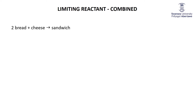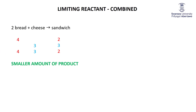Consider this analogy: I like cheese sandwiches — two bits of bread and one slice of cheese per sandwich. With four bits of bread I can make two sandwiches; with three slices of cheese I can make three sandwiches. But if I have four bits of bread and three slices of cheese, I can only make two sandwiches — I have enough cheese for three but only enough bread for two, so I make the smaller amount.